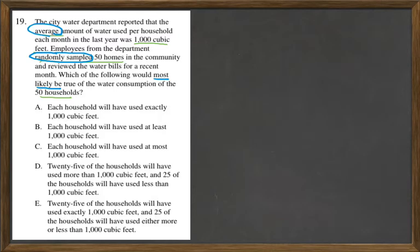So on the first one, each household will have used exactly 1,000 cubic feet. No, because we're talking about an average. Each household will have used at least 1,000 cubic feet. That's the same as saying that there's nothing below 1,000.